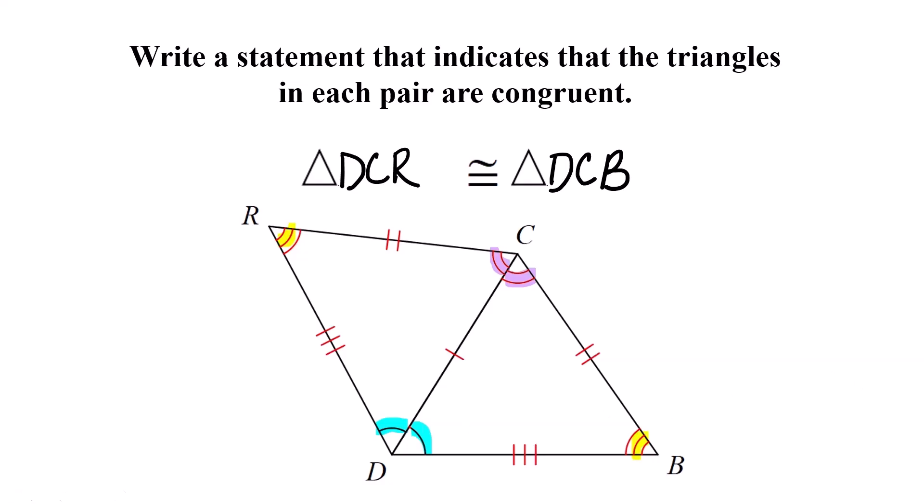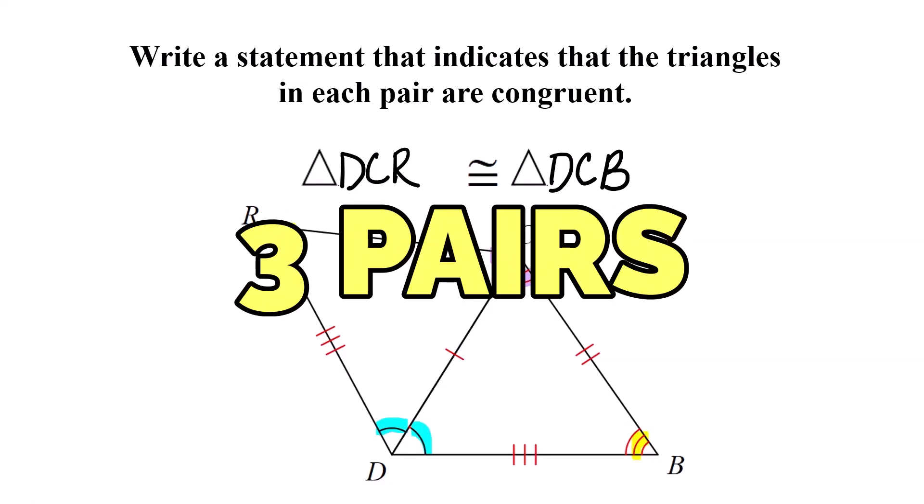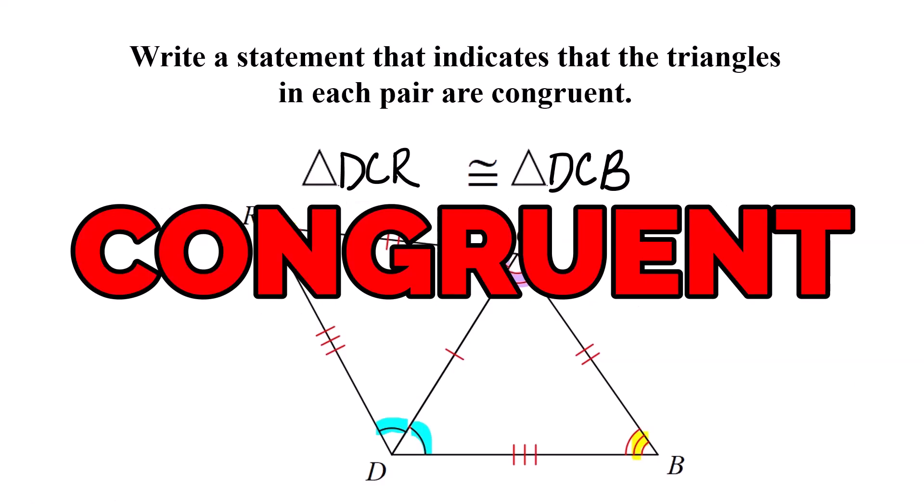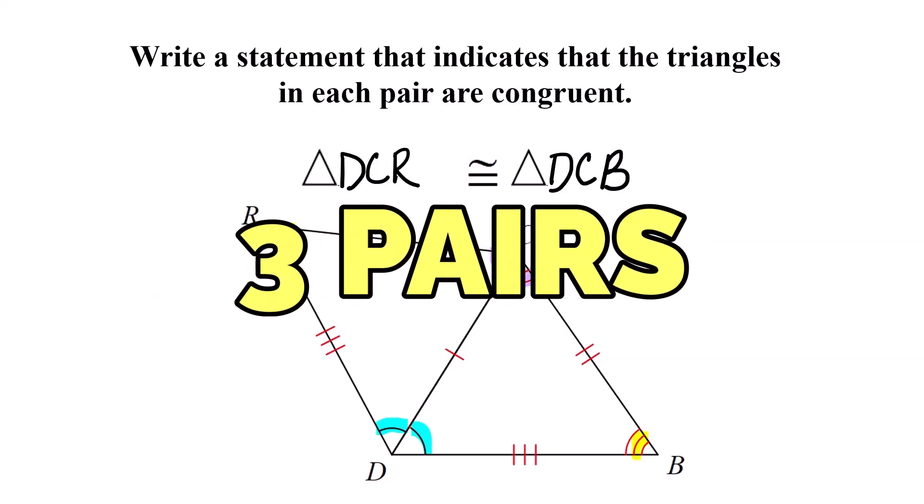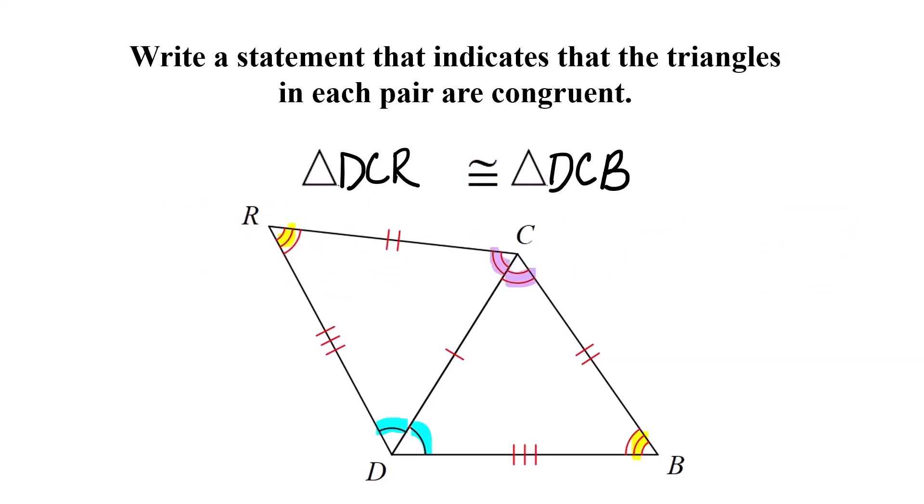Triangles are congruent if all sides and all angles are congruent — that's six pieces of information. But do you really need six pieces? No, you don't. In the next set of videos, we're going to show you how to do this with only half that information and half the work. Thanks for watching — I'll see you over there!